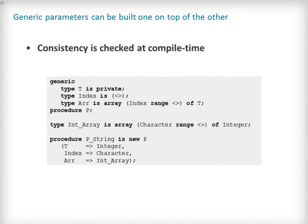It is possible to specify the array, its index and component types all in the generic unit's contract. This allows the generic contract to contain types that build on top of each other. In this example we show a generic procedure called P. Its contract first contains a simple private type T followed by a discrete type index. T is then used as the component type for the array type R and index has been used for the array index. The example instantiates P as the procedure P_string and provides an integer for T, character for index, and the previously declared array type int_array. The key point here is that the consistency of this layering will be checked by the compiler at compile time.